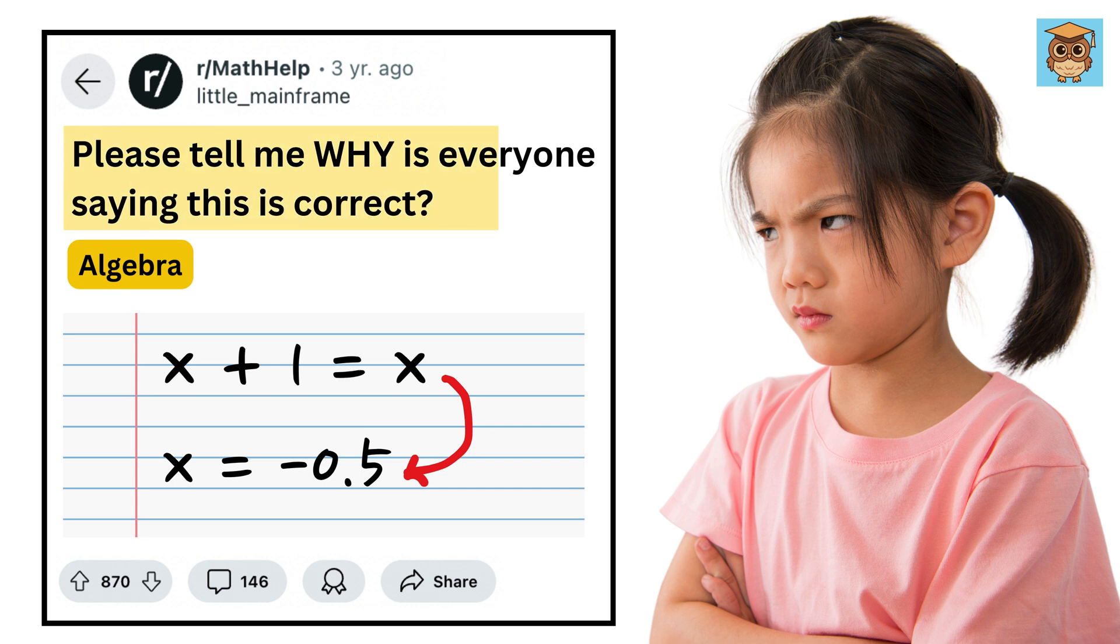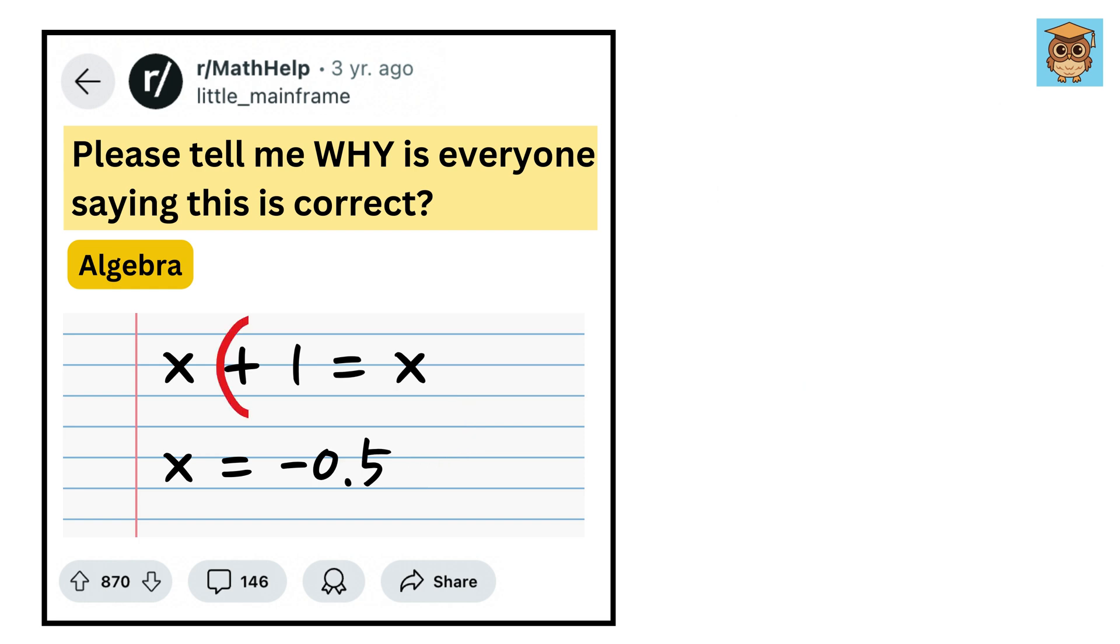Please tell me why is everyone saying this is correct and why is it going viral. In simple terms, if you add one to something it should get bigger, right? So if you take any number, say five, and add one to it, you get six. That's not the same as the number you started with, which was five.